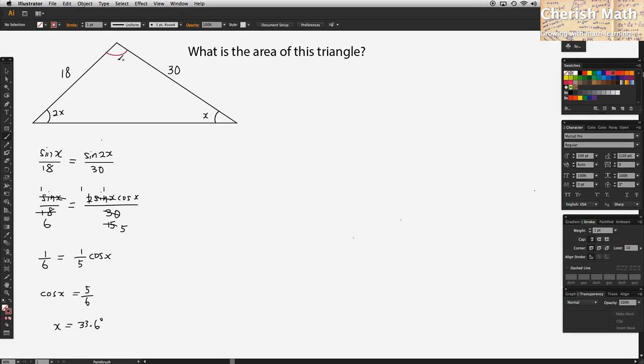Now, we want to find the value of theta angle by using 180 degrees minus the sum of the two angles, 2x and x, and that would be 180 degrees minus 3x.